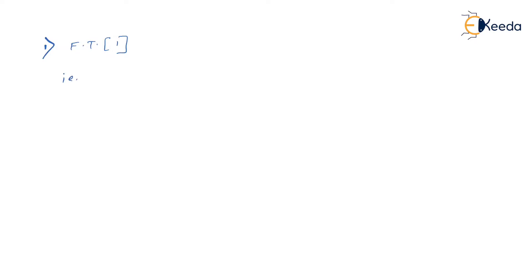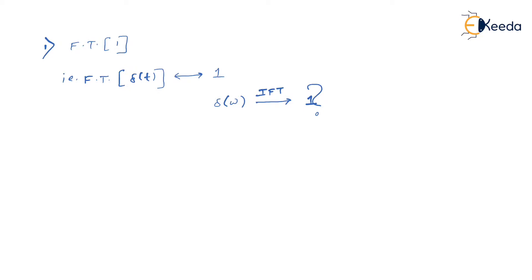First, we have to get the Fourier transform for 1. We have already seen that the Fourier transform of the delta function δ(t) is 1. This relation is bidirectionally true — that is, the Fourier transform of δ(t) is 1, and the inverse Fourier transform of 1 is δ(t). Now the question is: if I try to get the inverse Fourier transform of δ(ω), will it be 1 or something else?